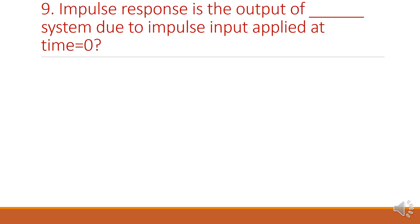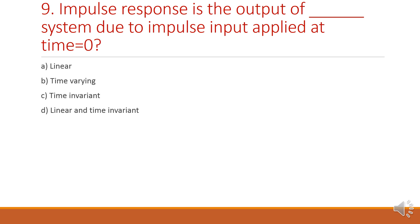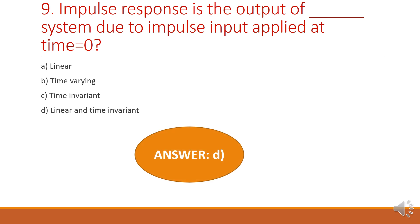Next question: impulse response is the output of a dash system due to the impulse input applied at time equal to 0. Option A: linear. Option B: time variant. Option C: time invariant. Option D: linear and time invariant. The answer is option D, linear and time invariant.